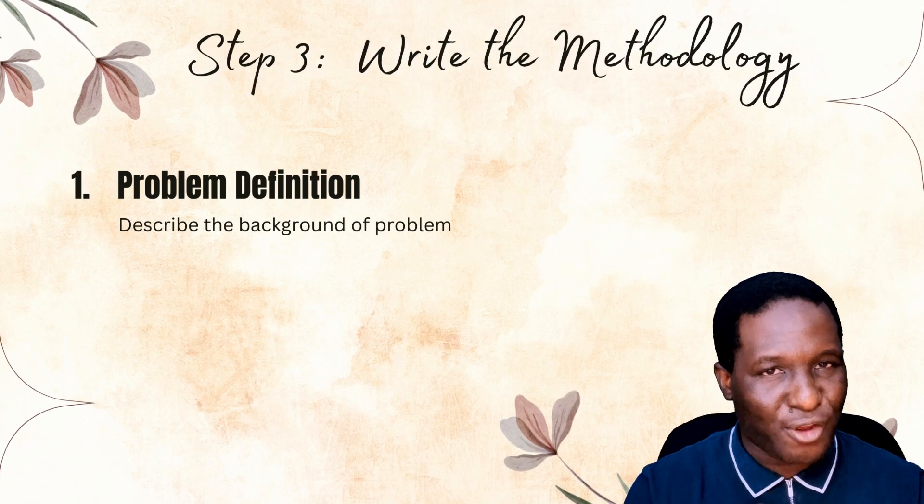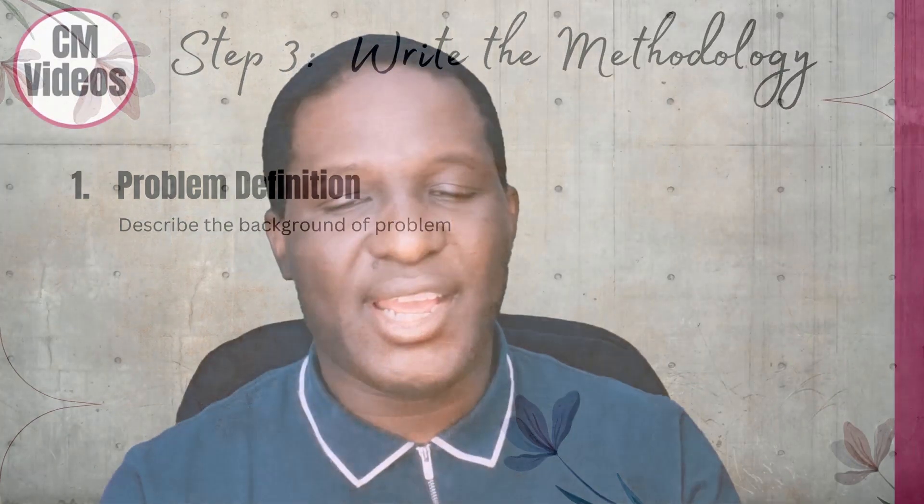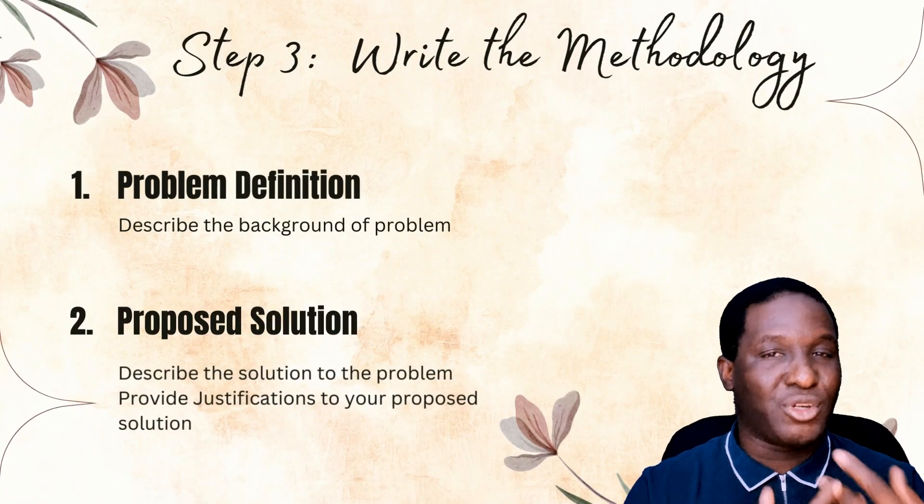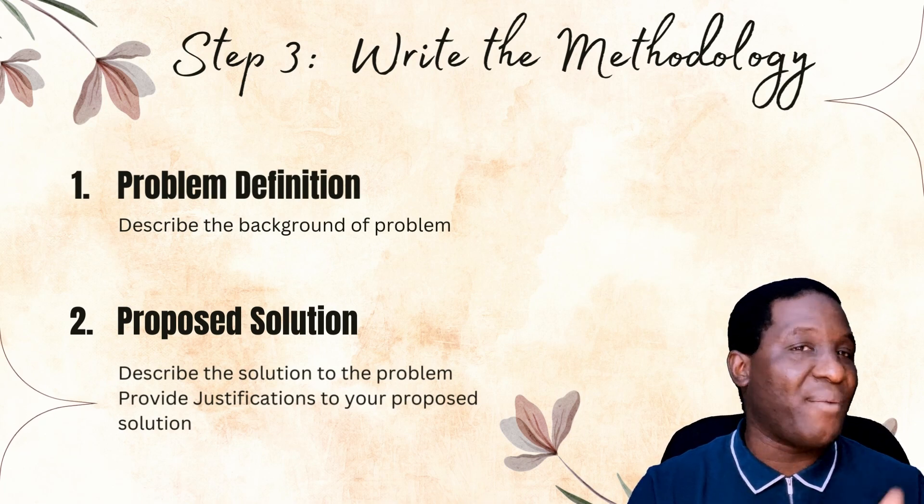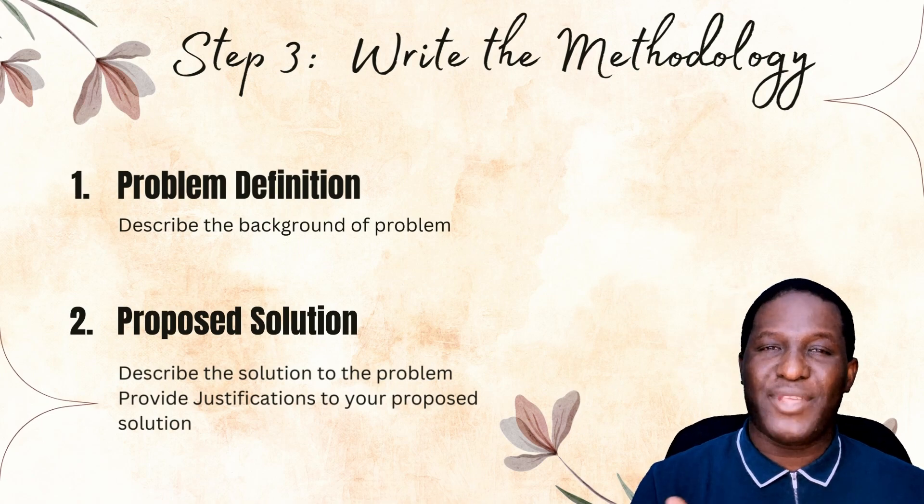The third step is actually writing the methodology. To structure it, the first thing is problem definition — briefly recapturing what you've covered in the background and literature review. The problem here is that developing countries lack mechanized farming, so strawberries aren't harvested in time, causing economic losses. The solution is to automate the system using solar power, which must be autonomous and continuous. The justification is that reliable light isn't guaranteed, so once the solar power is installed, the system can run indefinitely.